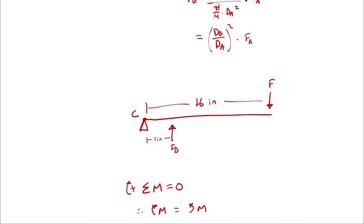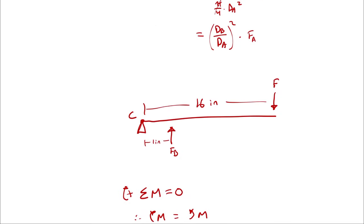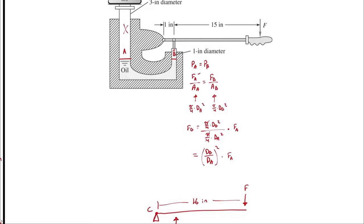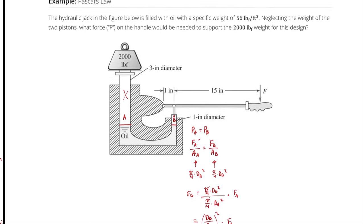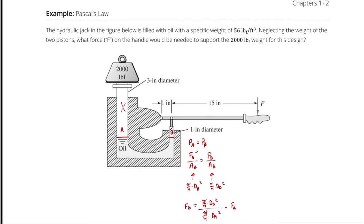So we have two mechanical advantages here. We have the lever of the handle itself, and then we have the mechanical advantage as a result of different diameter pistons in a hydraulic system. So it takes only 13.9 pounds to support this 2,000 pound weight. We are offsetting literally a ton. Cool, huh?